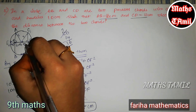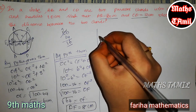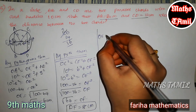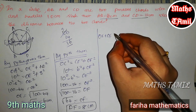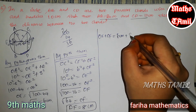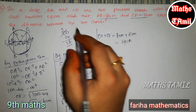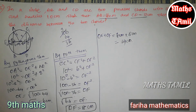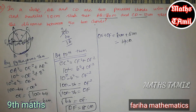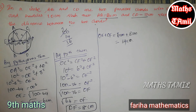The distance between the two chords is OE plus OF. OE is 6 centimeters and OF is 8 centimeters, so the distance between the two chords is 6 plus 8 equals 14 centimeters. That is the answer. Please like and share the video. Thanks for watching.